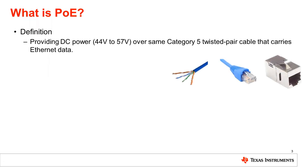PoE provides DC power — 44 to 57 volts, although most customers use 48 volts — over the same Cat5e cable that carries Ethernet data. An RJ45 receptacle connects to a Cat5e cable, and inside that cable are four twisted pairs of wire used to send both power and data over the same cable.